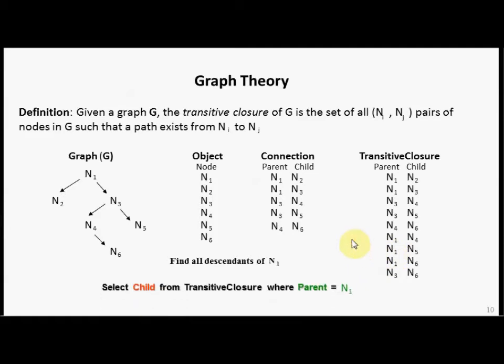What can you do with the transitive closure of a graph? You can use it to navigate a graph. If we want to know all of the descendants of N1, we can write a select statement as follows: Select child from transitive closure where parent equals N1. Let's execute this query. Let's find all the rows where the parent has a value of N1. We see that in green. And let's find all of the children from all those records. We get N2, N3, N4, N5, N6.